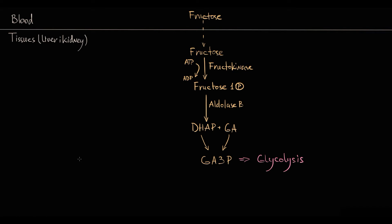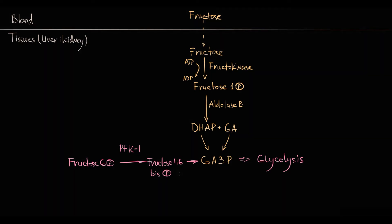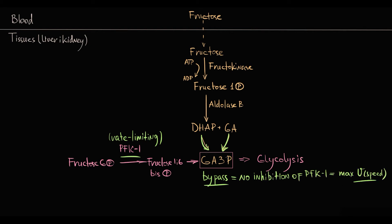The reason why the liver metabolizes fructose faster than any other monosaccharide is that fructose is the only monosaccharide whose metabolic pathway bypasses phosphofructokinase 1 — the major rate-limiting enzyme in glycolysis, which controls the conversion of fructose 6-phosphate to fructose 1,6-bisphosphate. The final product of fructose degradation is glyceraldehyde 3-phosphate, an intermediate that enters glycolysis after the phosphofructokinase 1 rate-limiting point. Therefore, glyceraldehyde 3-phosphate does not inhibit phosphofructokinase 1, meaning the liver metabolizes fructose without the phosphofructokinase inhibitory effect.